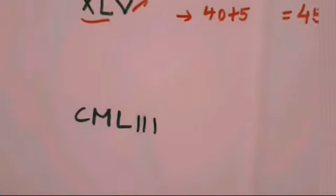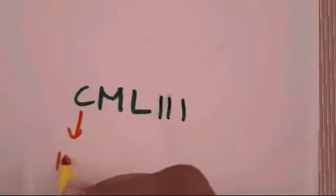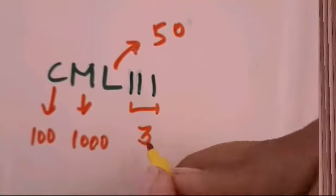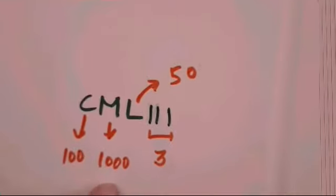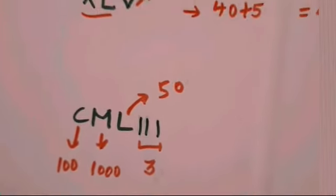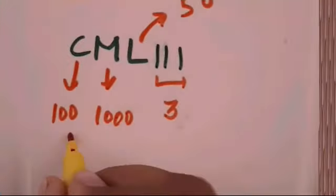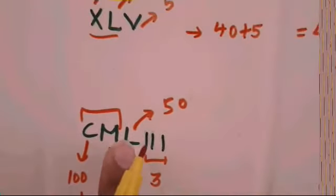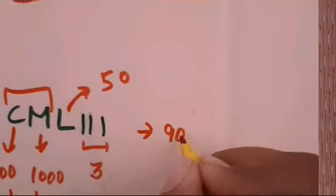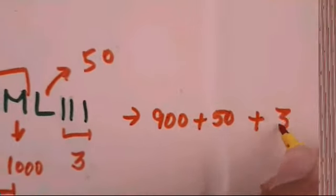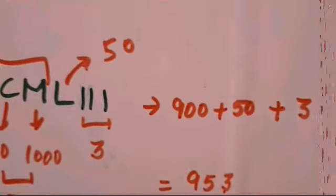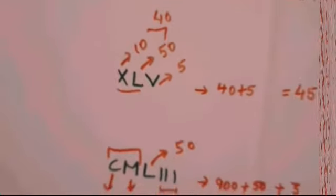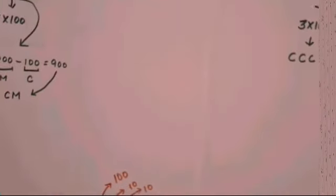One more example: CMLIII. C represents 100, M stands for 1000, L stands for 50, and III means 3. Since 100 is smaller than 1000, subtraction takes place — we subtract 100 from 1000 to get 900, so CM represents 900. Then 900 plus 50 plus 3 gives us 953. So the number represented is 953.